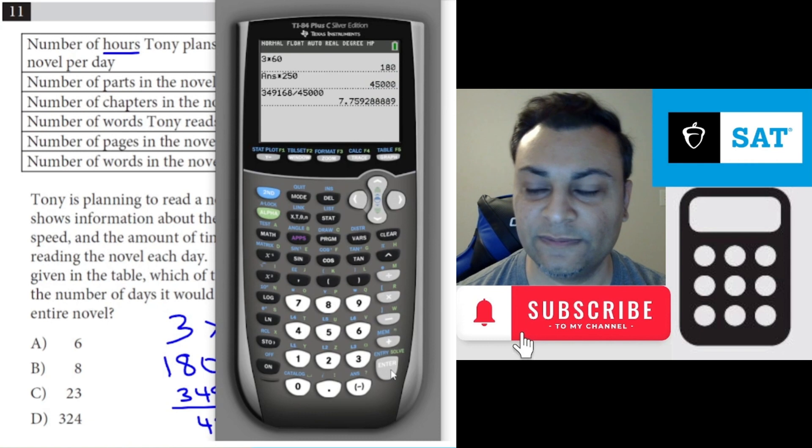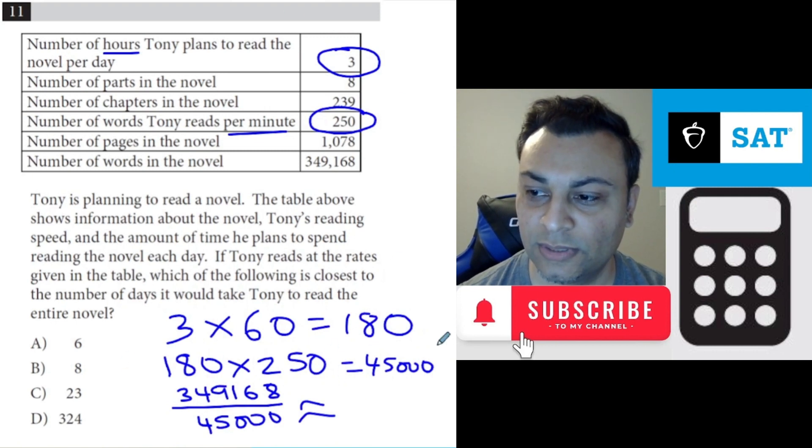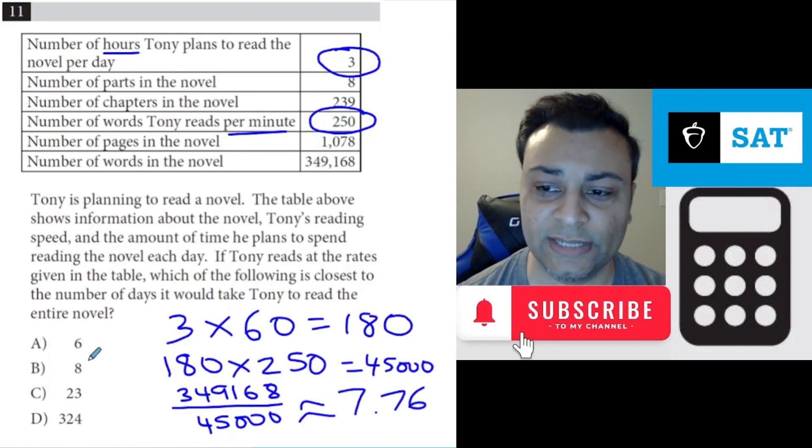Seven point seven six roughly speaking. So seven point seven six, and the closest to that is eight. So the answer is B.